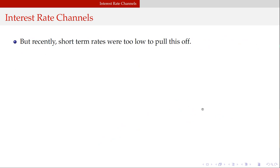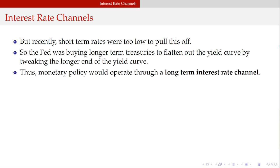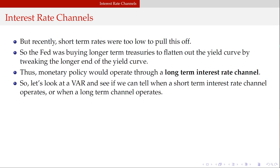When short-term rates were too low to pull this off, the Fed starts buying longer-term treasuries to flatten out the yield curve, tweaking the longer end. When monetary policy operates through the intention of affecting long-term rates in lieu of short-term rates, that's known as a long-term interest rate channel.